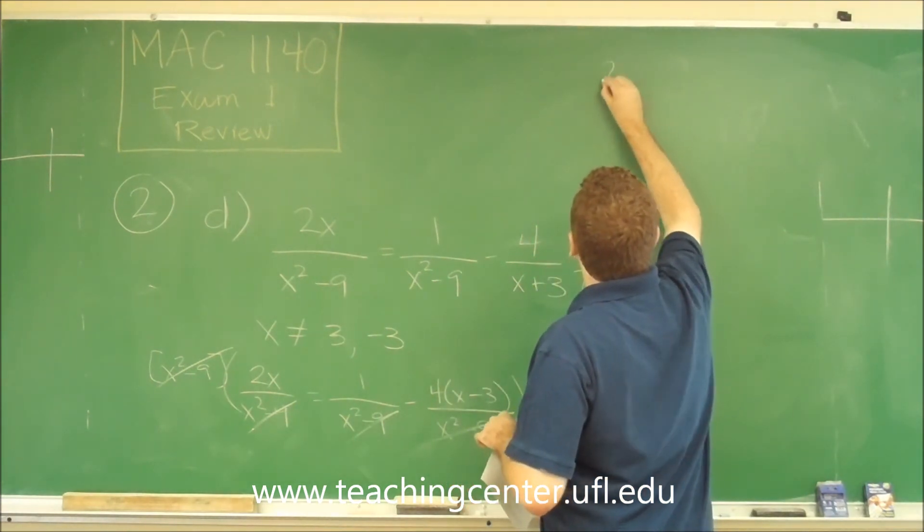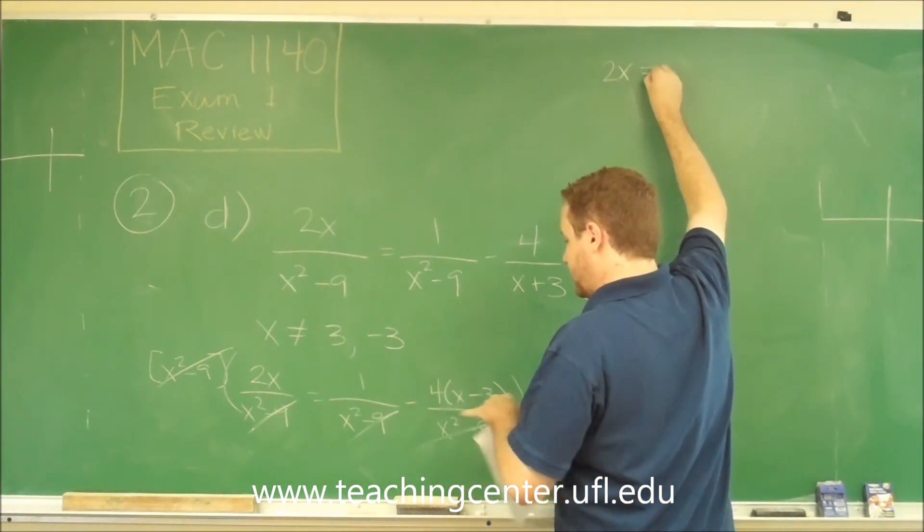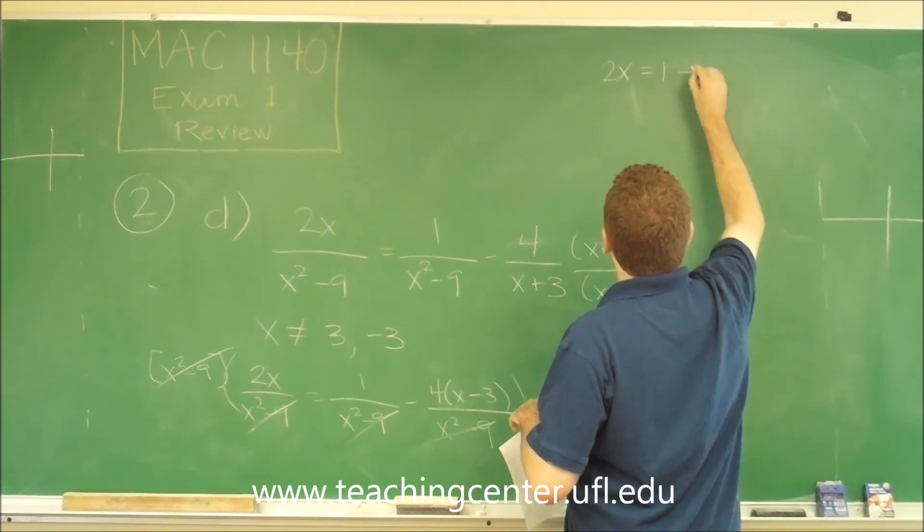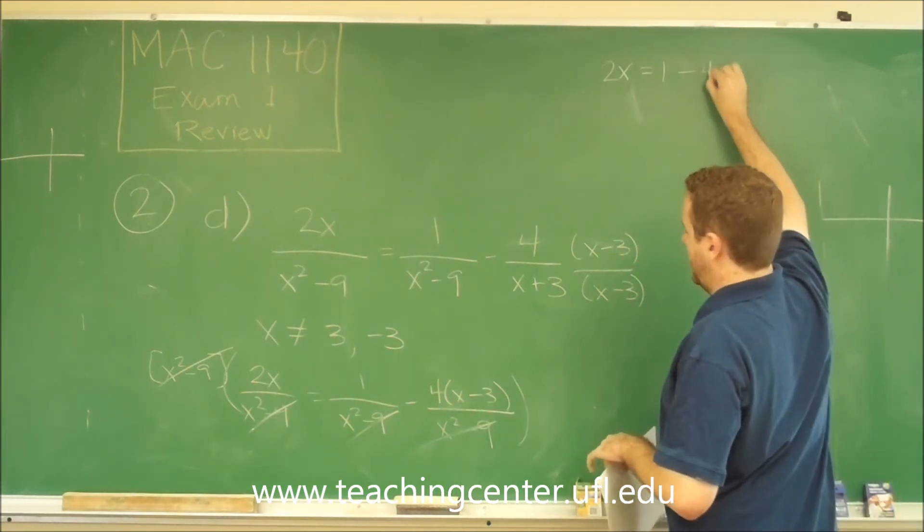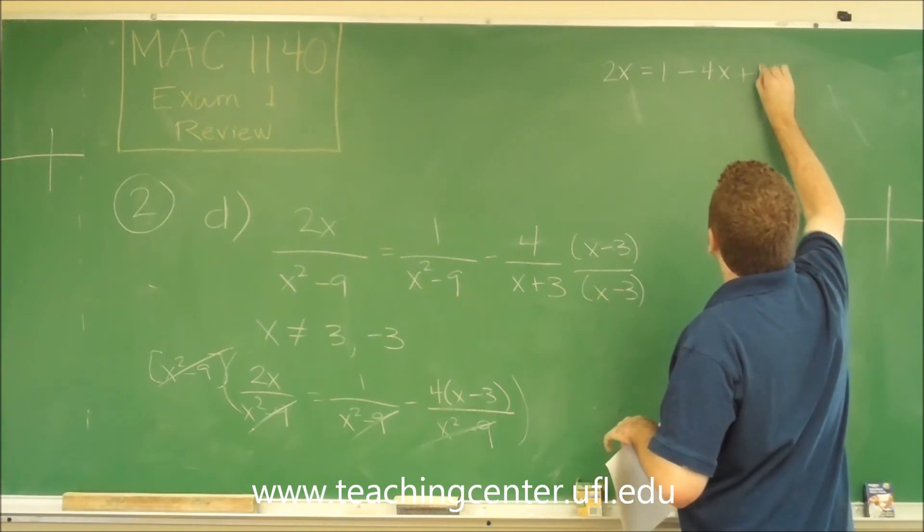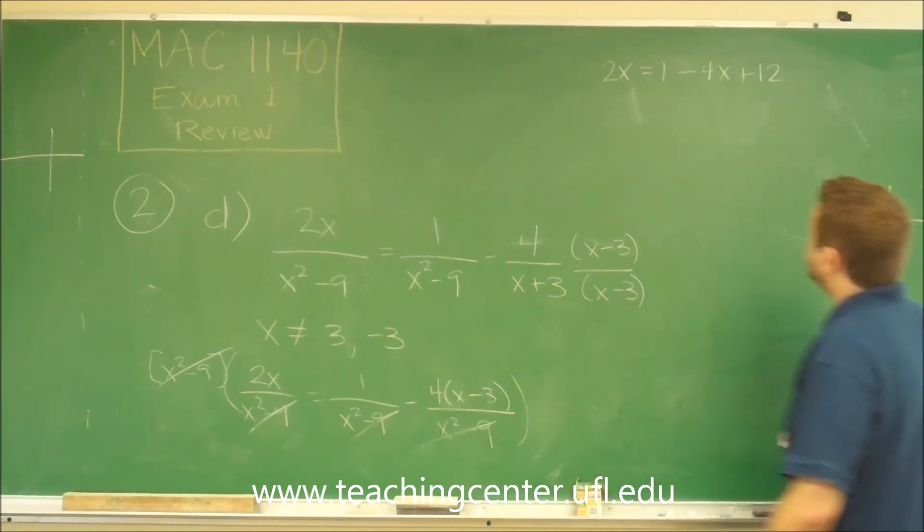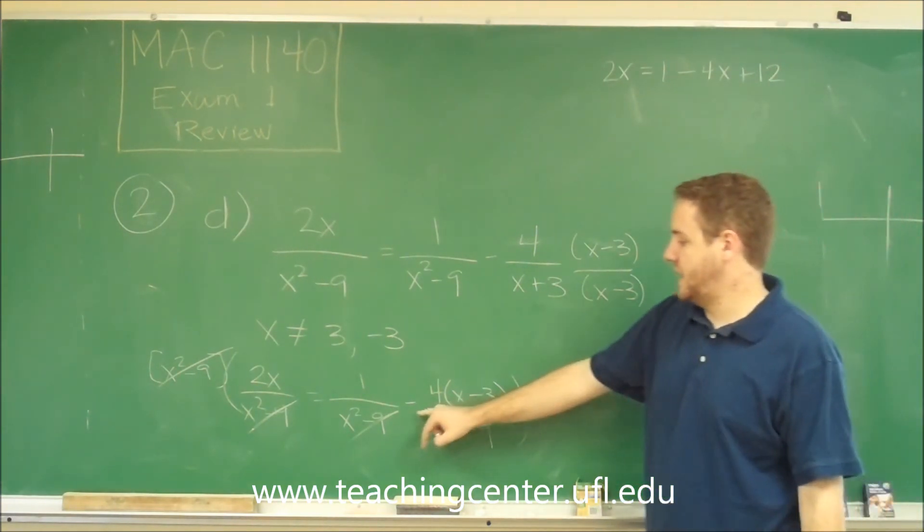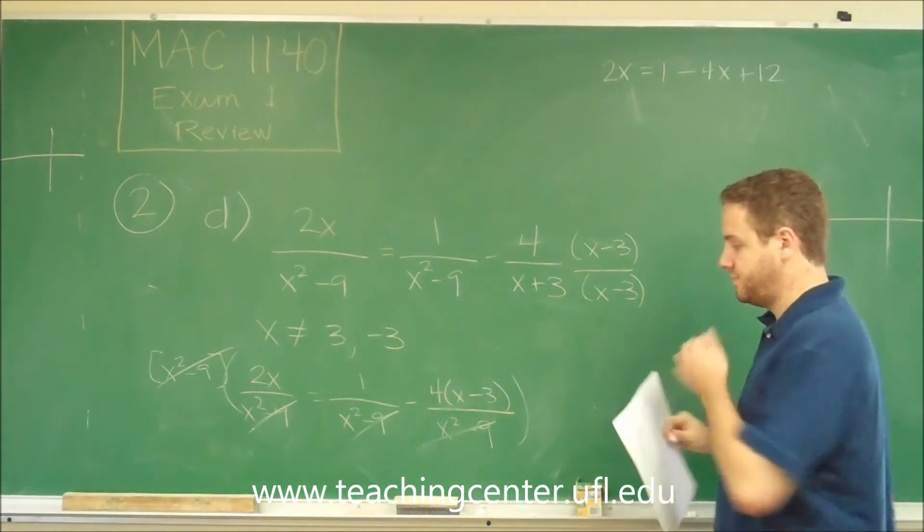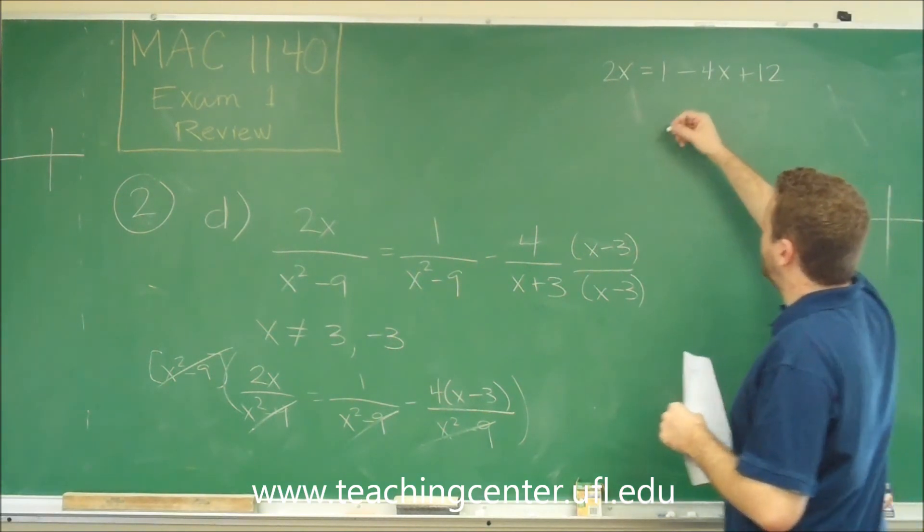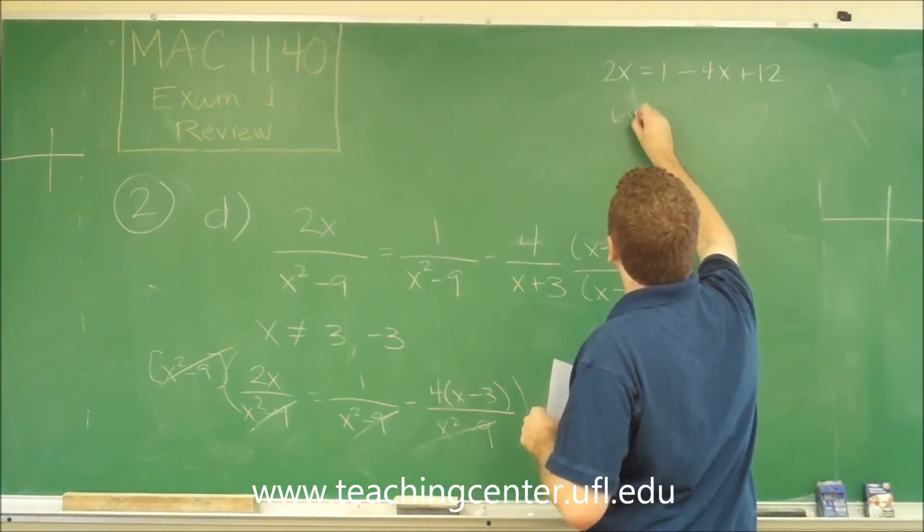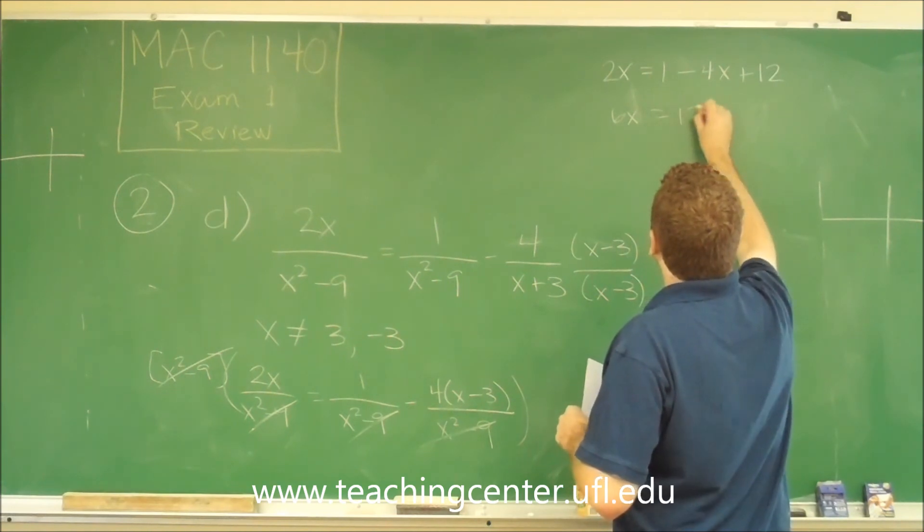So we're just going to have 2x equals 1 minus, and now let's distribute that 4. So we have minus 4x plus 12. Remember to distribute this negative sign to both of those. So now we just need to combine like terms and solve here. We add the 4x over and we get 6x, 1 and 12 is 13.